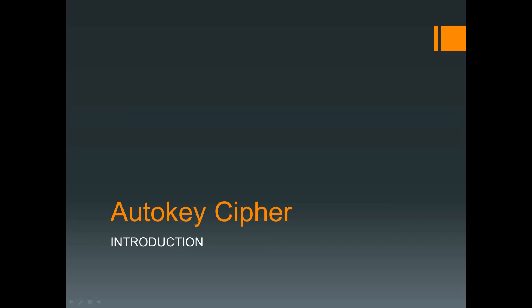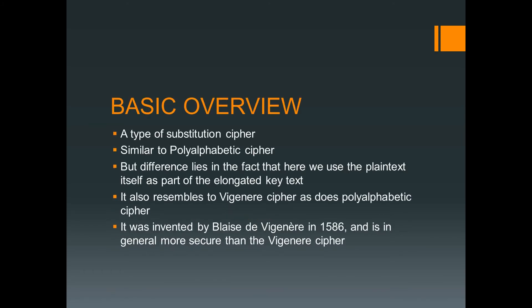Now let's start our discussion on auto key cipher. Before going into the algorithmic part, I would like to give you the basic overview for this cipher. Similar to the polyalphabetic cipher, this auto key cipher is also a kind of substitution cipher. But the basic difference between the two ciphers lies in how the key or the intermediate text is framed in both cases.